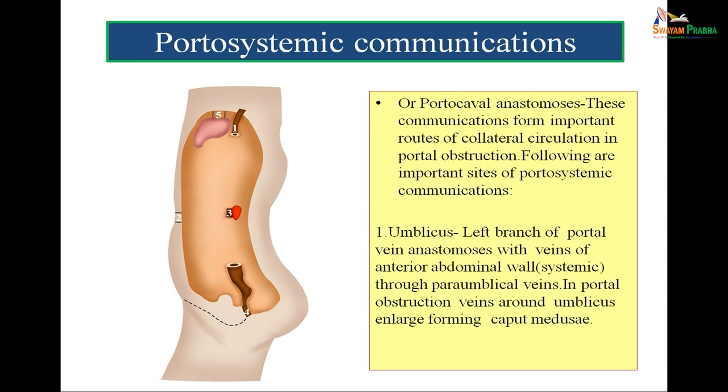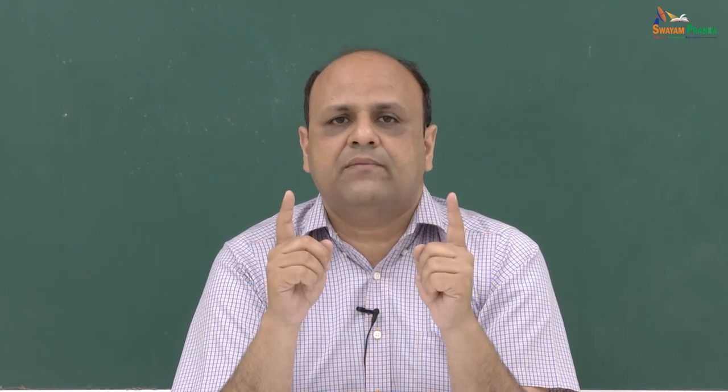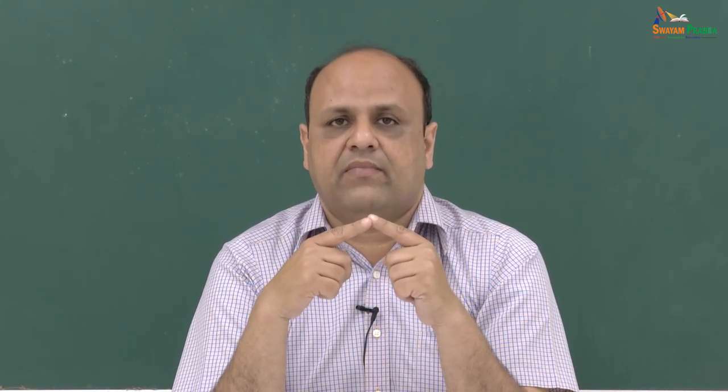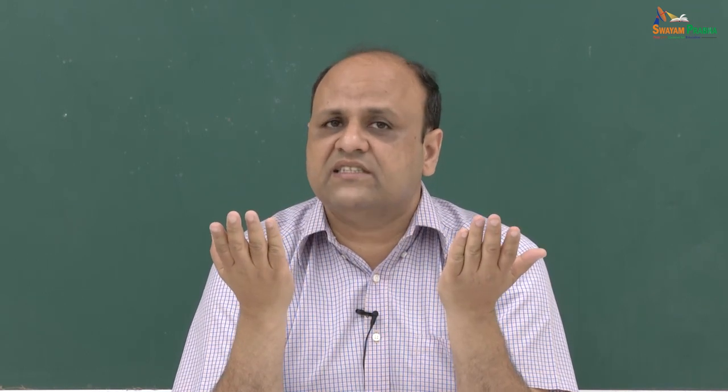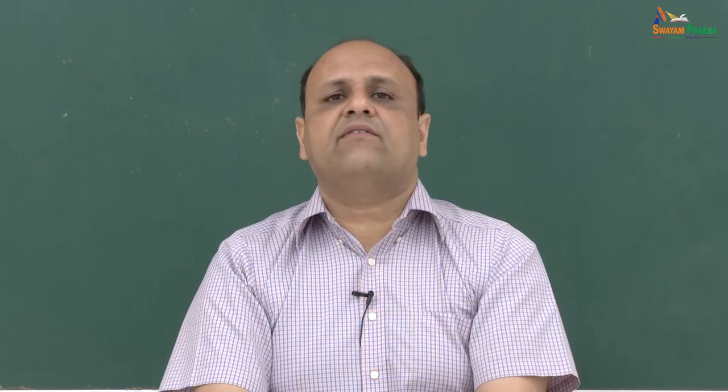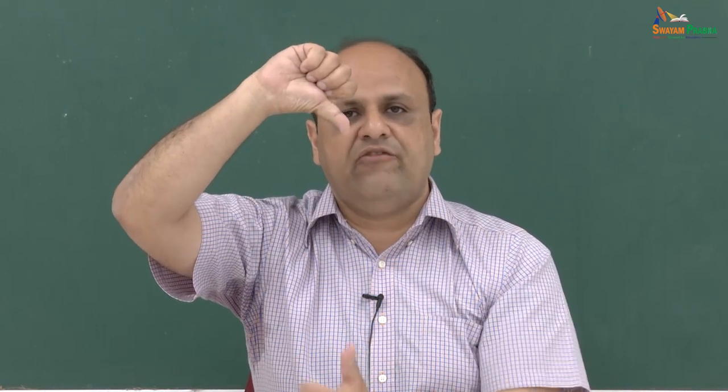Now we come to the concept of portosystemic anastomosis. This is a very important concept because it has clinical implications. In our body there are some sites where the portal system anastomoses with the systemic system. The portal system refers to the portal vein, draining the abdominal part of the alimentary tract, gallbladder, pancreas and spleen. The systemic veins are the superior vena cava and inferior vena cava — the superior vena cava entering the right atrium from above and the inferior vena cava entering it from below.